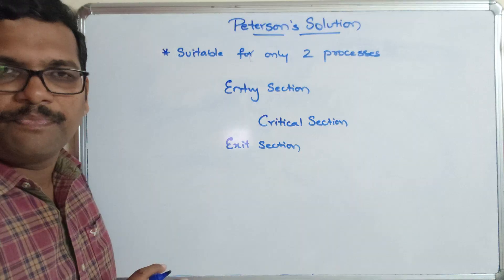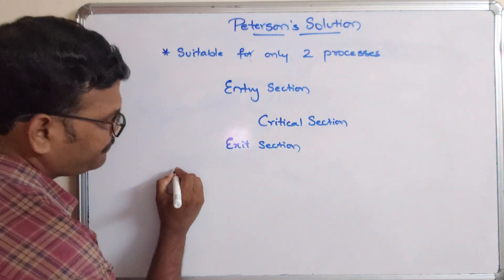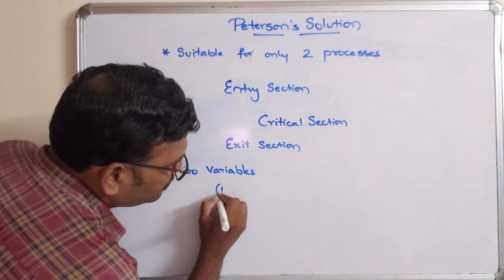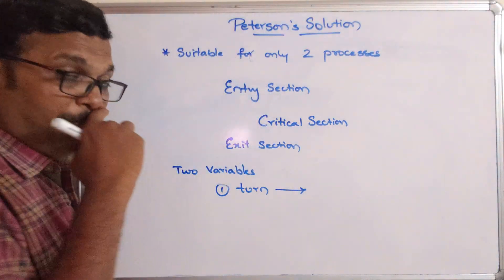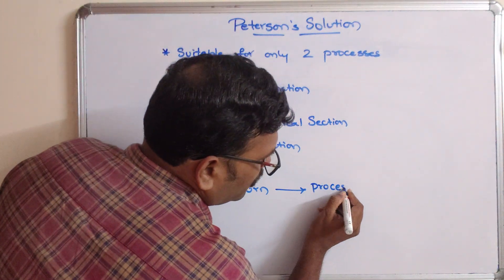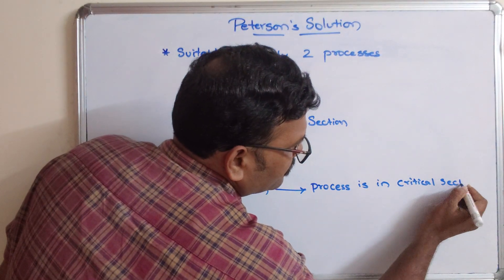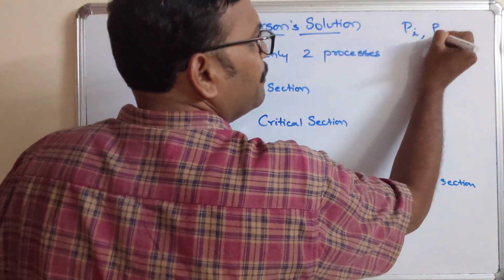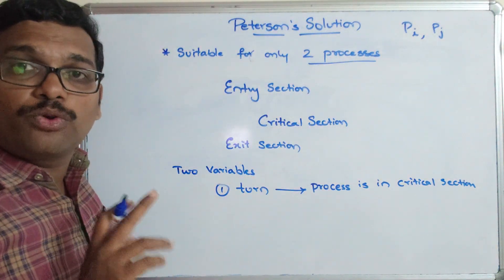Based on this structure, we will define the Peterson solution for two processes. Before going to that, this Peterson solution will use two variables. One is 'turn', which implies which process is already in the critical section. This Peterson solution will be suitable only for two processes.